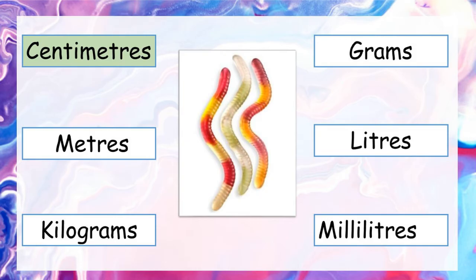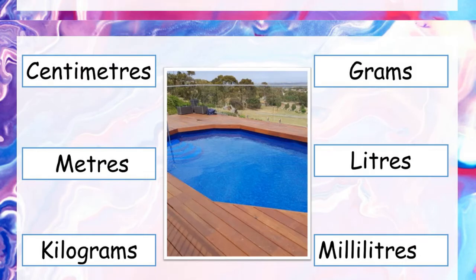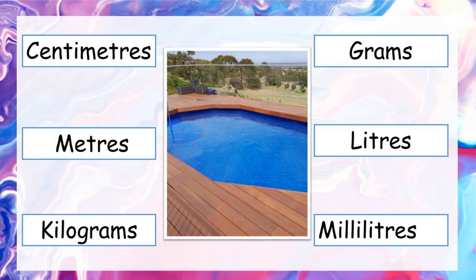And our last one. Take a look at this swimming pool. If I wanted to measure the capacity of this swimming pool, which unit of measurement would I use? Pause the video and write down the correct answer. The capacity measurements we learnt in the last lesson are millilitres and litres, but this is quite a big container so we would use litres.